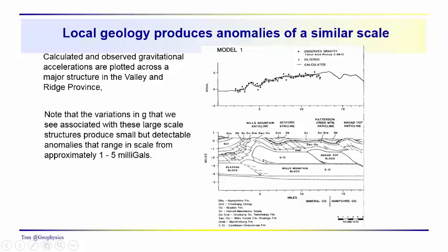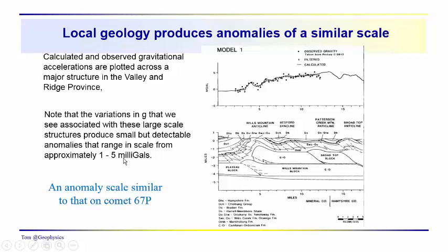Local geology: if we come into the central Appalachians and go over into the valley and ridge, we can see these broad thrust sheets that extend for several miles across the region, and they produce anomalies on the order of about 1 to 5 milligals. So we're in that range — driving through most areas in the Appalachians, you're experiencing changes of gravity on the order of 1 to 5 milligals, similar to what you might experience on comet Cheryomov-Gerasimenko. Something you are just not going to notice.